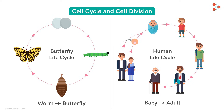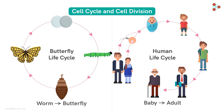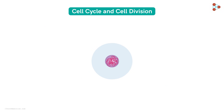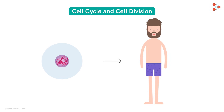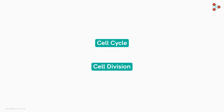We all know that each multicellular organism begins life in the form of a single cell. So, how does a single cell get transformed into a large organism? To comprehend this, let's understand the concept of a cell cycle and cell division, beginning with their definitions.